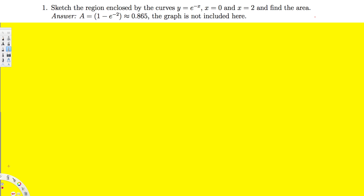Hey, what's going on guys? Let's do this problem right here. The question is asking us to state the region enclosed by the curve y = e^(-x), x = 0, and x = 2, and find the area.